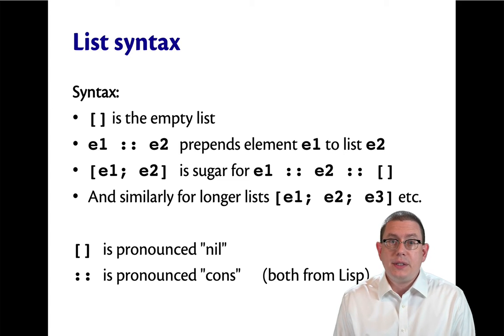The other way of building a list is with double colon. E1 double colon E2, where E1 and E2 are expressions. That prepends an element E1 onto a list E2.